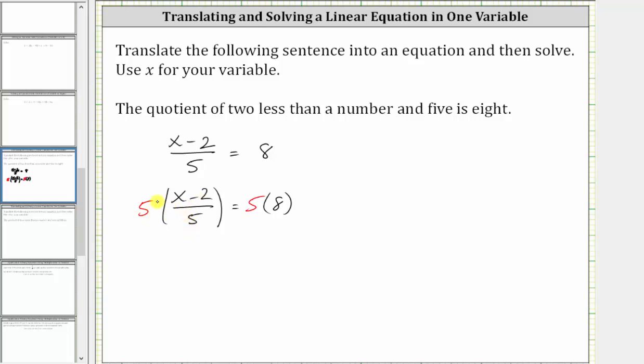Or if it's helpful, we can write five as a fraction with the denominator of one. And notice now we have a common factor of five between the numerator and denominator. Simplifying, five divided by five simplifies to one in the numerator and denominator, leaving us with just one times the quantity x minus two, which is x minus two.